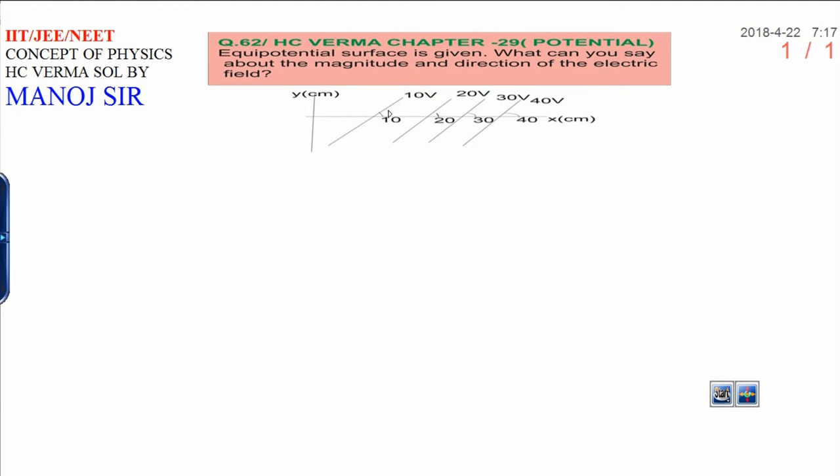about the magnitude and direction of electric field? This angle is given, this angle is 30 degrees, this angle is 30 degrees, and this is also 30 degrees. All have the same angle.